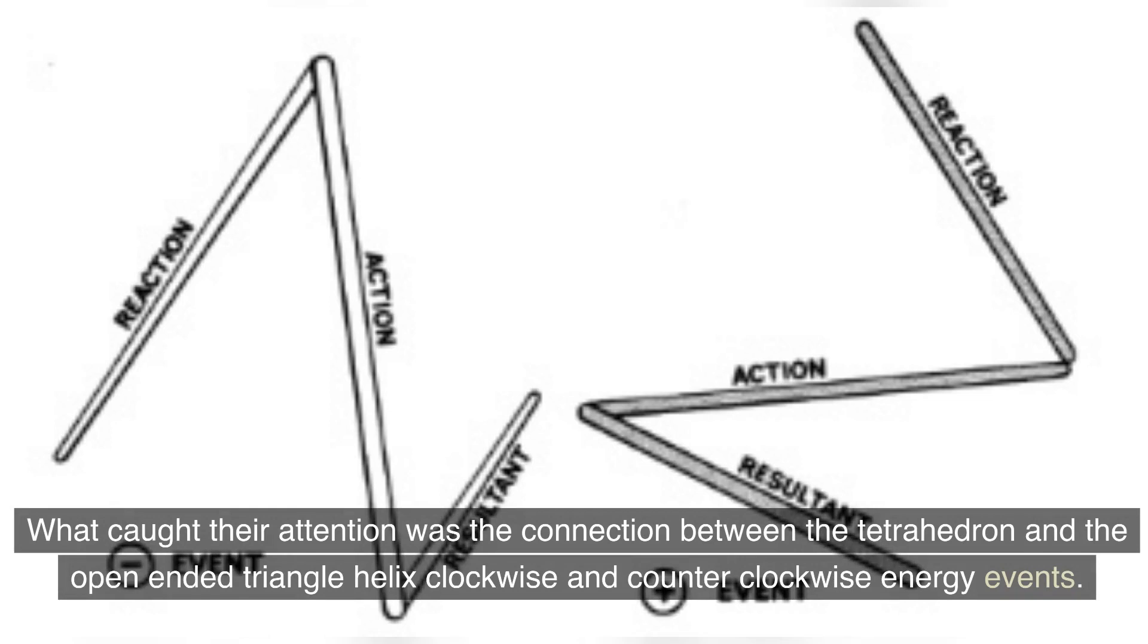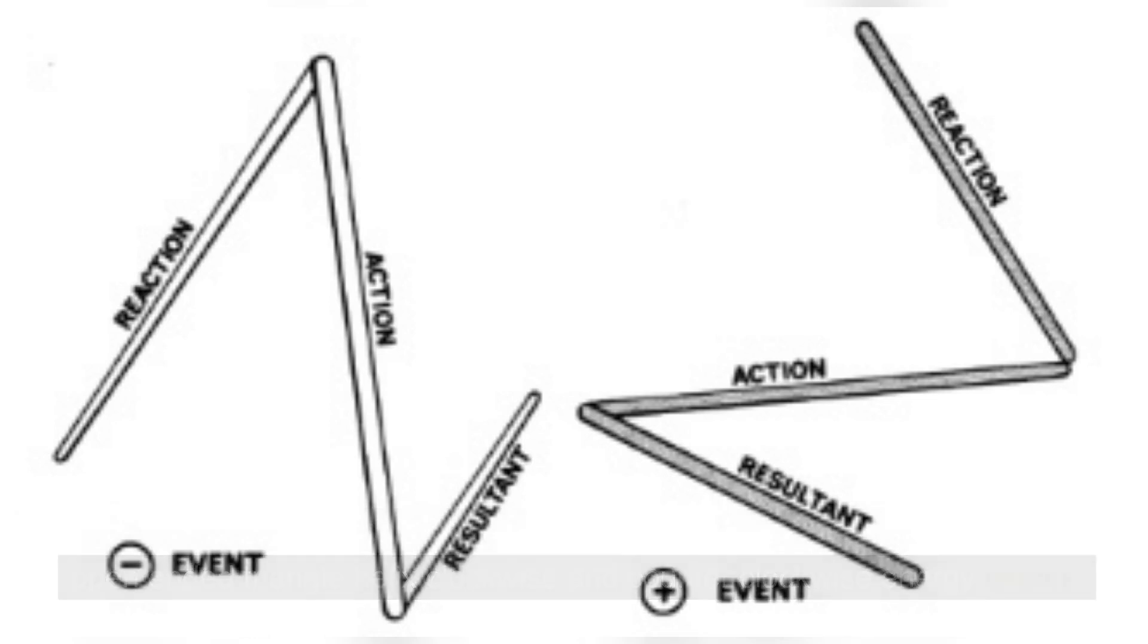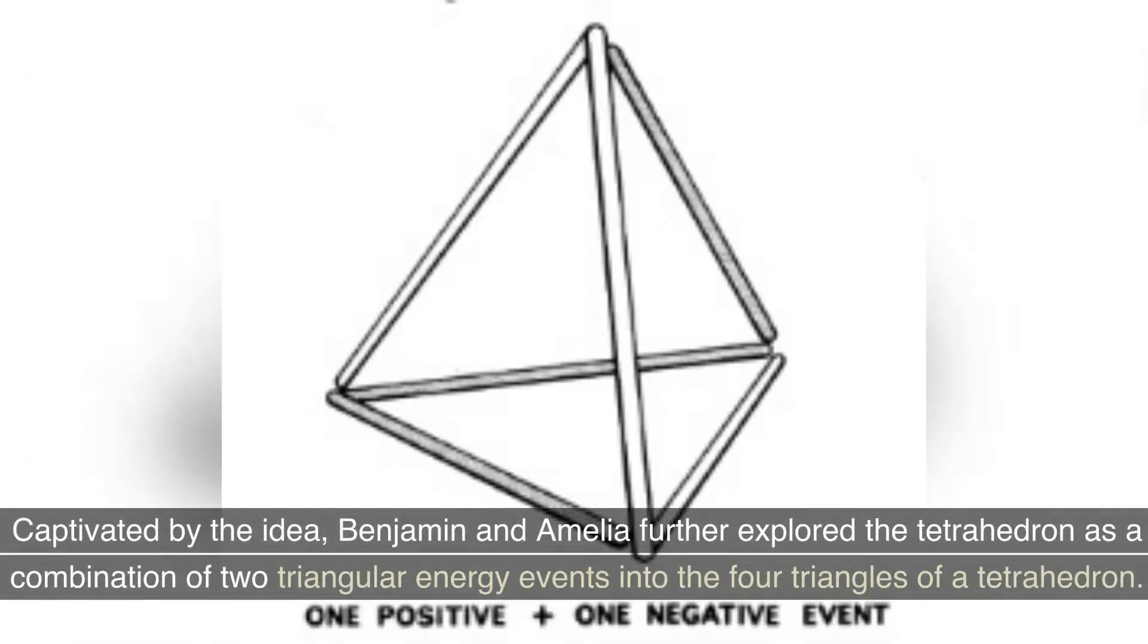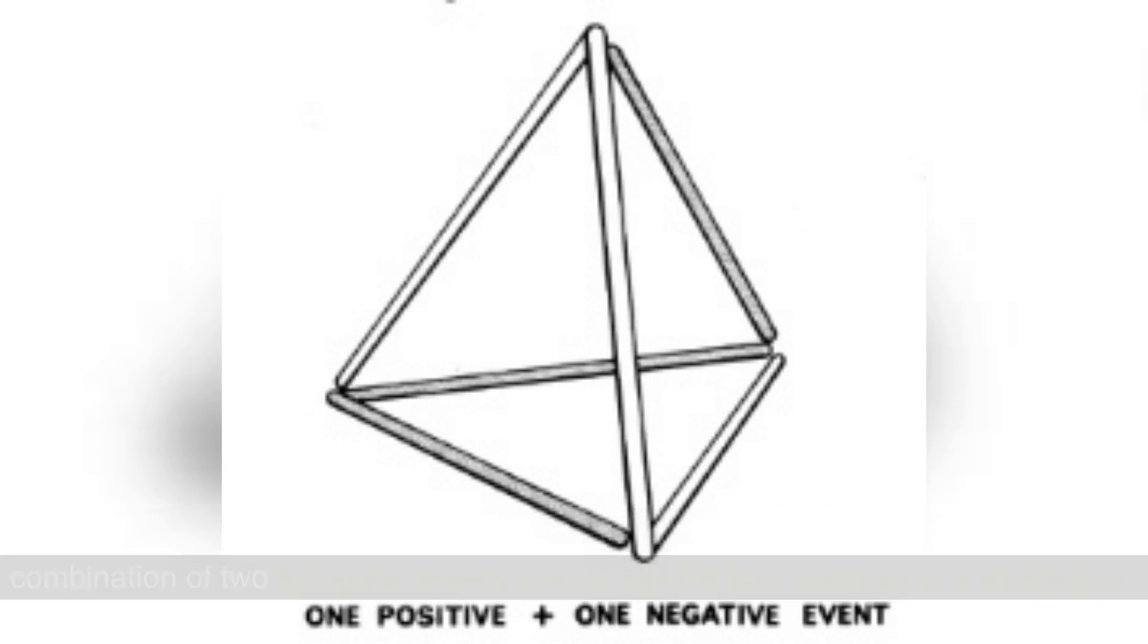What caught their attention was the connection between the tetrahedron and the open-ended triangle helix-clockwise and counterclockwise energy events. Captivated by the idea, Benjamin and Amelia further explored the tetrahedron as a combination of two triangular energy events into the four triangles of a tetrahedron.